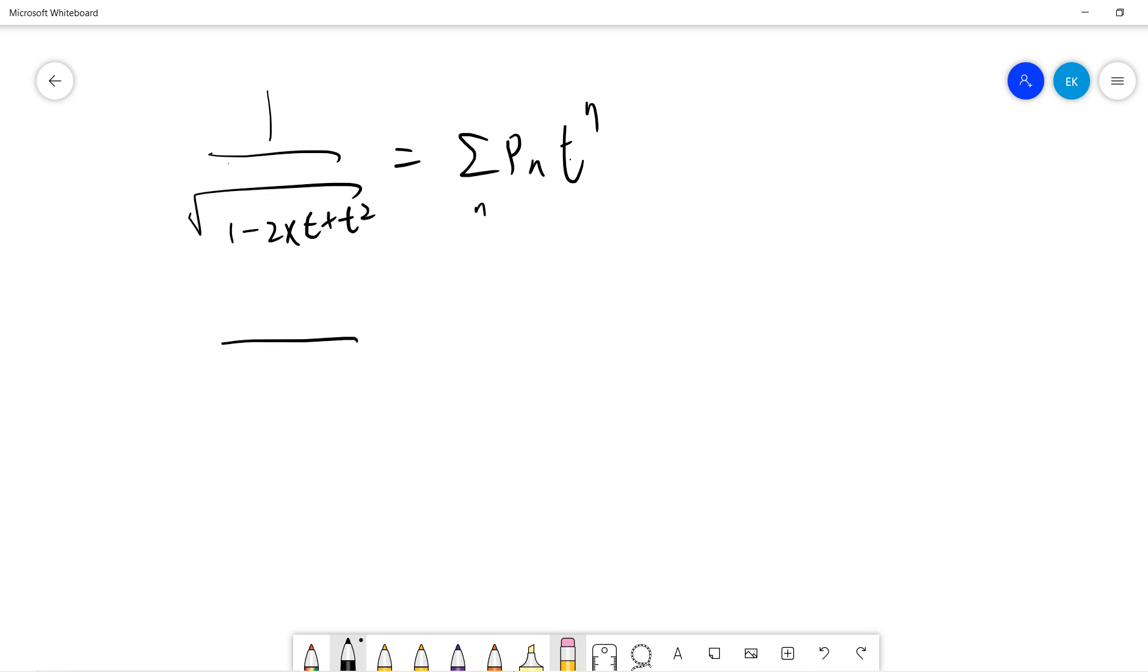So this is our starting point. And then we can just square it, otherwise there is nothing we can do. So we square it like this. Then we get Pn Pn T to the n plus 1, which sums from zero to infinity and also n from zero to infinity.